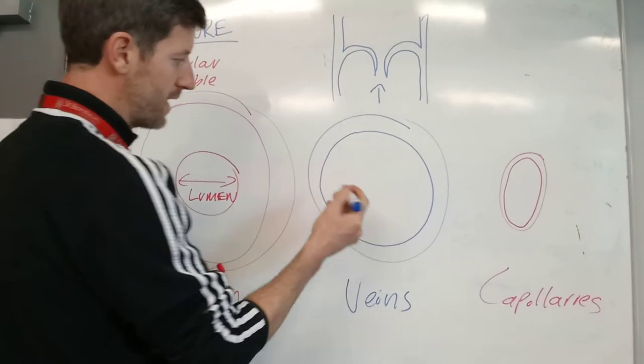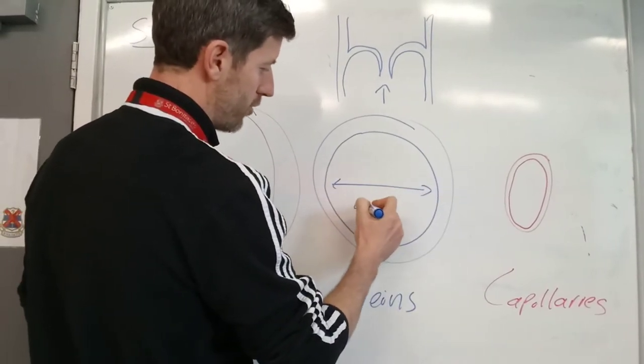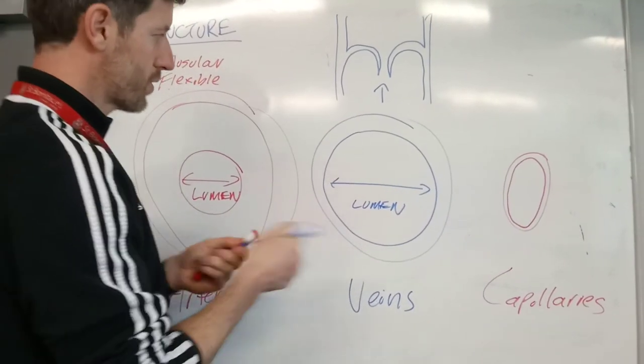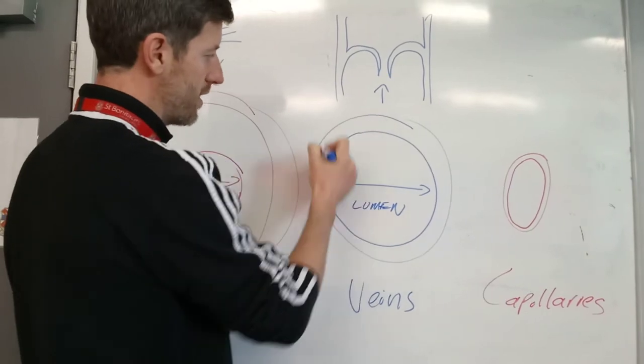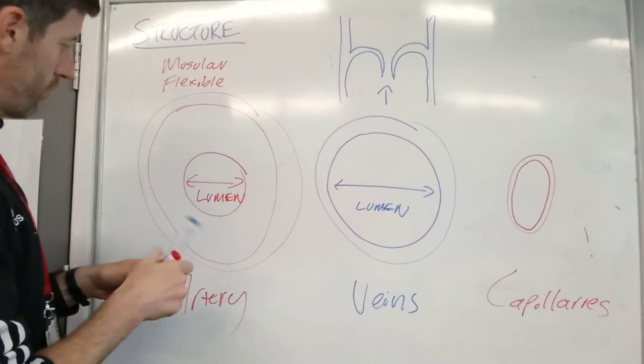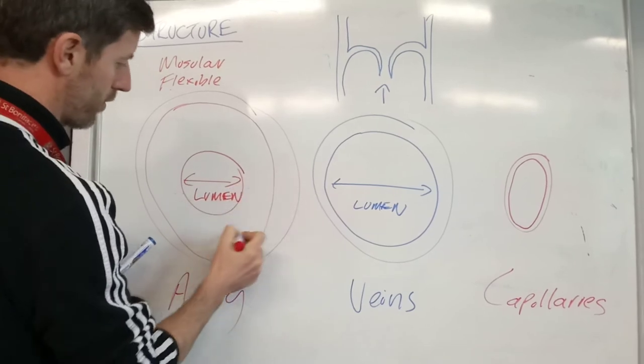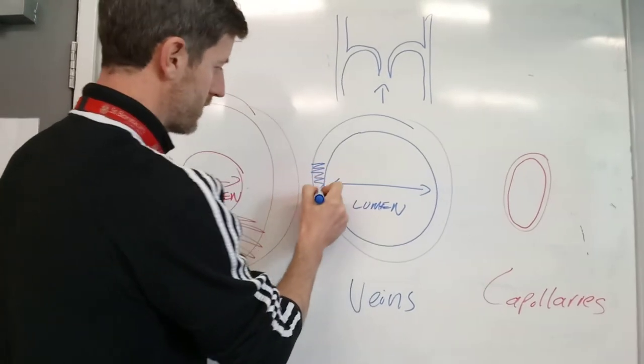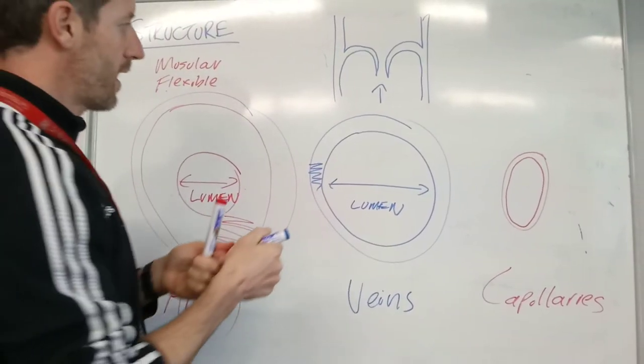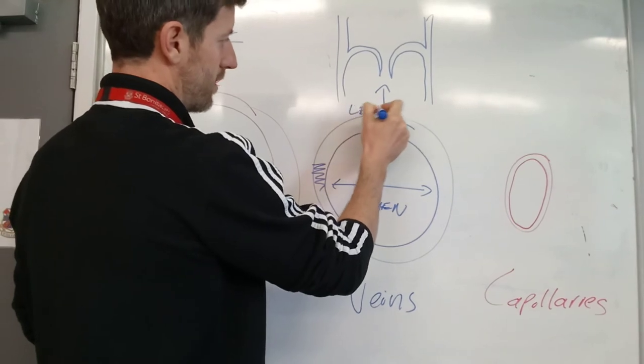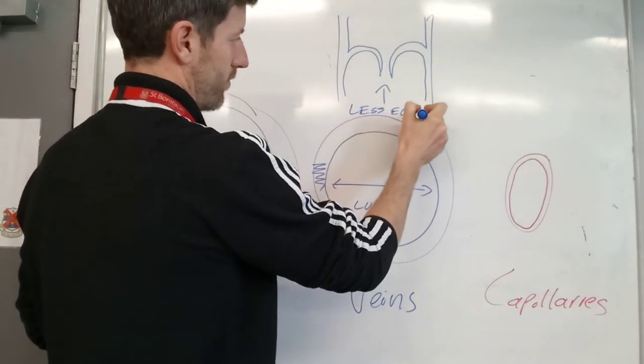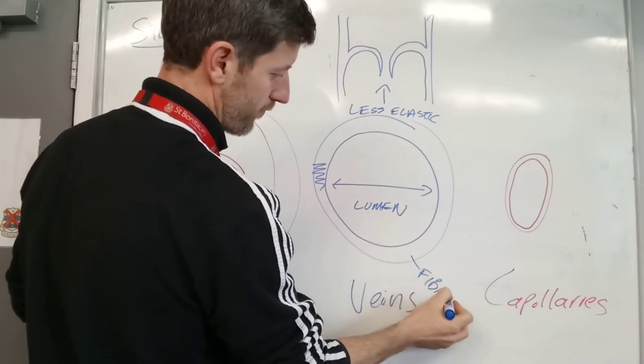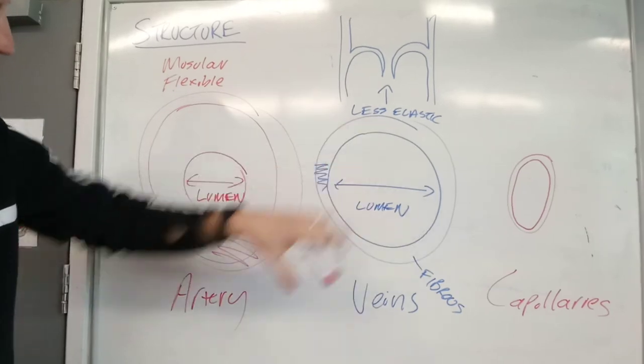So that means that now with these ones, one big thing is the lumen is a lot larger and the walls are generally thinner. So you've got a thinner wall compared to these walls. The wall thickness of the arteries is all of that. The wall thickness of the vein is just something like that. These walls are less elastic, so the walls are made out of more of a fibrous sort of makeup.